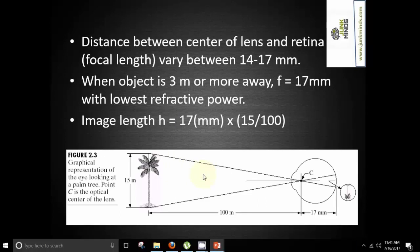Now what exactly happens when a human eye is looking at a palm tree. You can see in the figure that there is a palm tree of height 15 meter which is at a distance of 100 meter from the human eye. The point C here is the optical center of the lens and the image formed is at 17 millimeter from the point C. So basically it can be said that whenever an object is 3 meter or more away, the focal length is 17 millimeter with lowest refractive power. The image length here H is equal to 17 millimeter times 15 which is the height of the palm tree divided by 100 which is the distance from the palm tree.